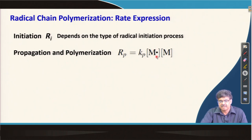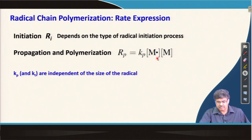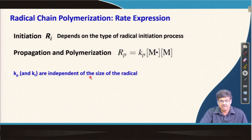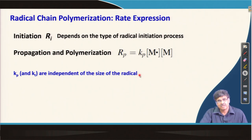The rate of propagation expression contains a term [M·], within brackets, which is the total concentration of radicals present in the reaction mixture. We had considered that the rate of all radical reactions were equal, meaning it was independent of the size of the radical. So even if the propagating radical is small or large, their reactivity is equal. This is a similar assumption to what we used for step growth polymerization — equal reactivity of functional groups — and it is experimentally proven.